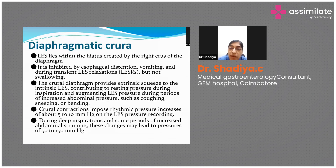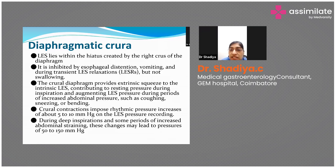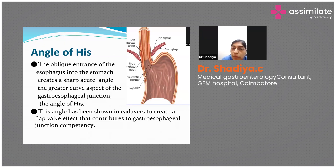The diaphragmatic crura lies within the hiatus created by the right crus of the diaphragm. It is inhibited by esophageal distension, vomiting, and during transient LES relaxation, but does not relax during a swallow. The angle of His is formed by the oblique entrance of the esophagus into the stomach, creating a sharp angle at the greater curvature that acts as a flap valve mechanism, reducing reflux episodes.